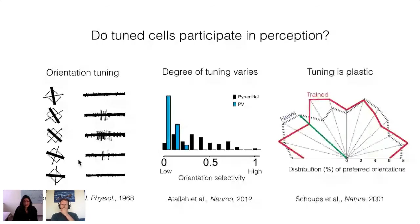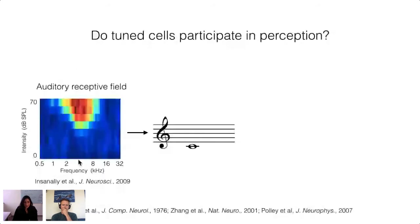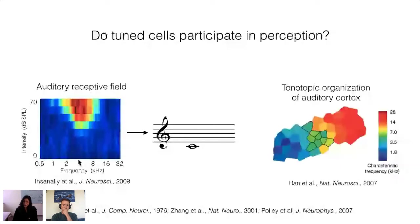Perceptually we either see oriented gratings or we don't, and there are many brain areas involved. We can ask the same question about the auditory system: are neurons tuned to pure tones responsible for us hearing middle C? Does the tonotopic organization of primary auditory cortex do anything as far as actual perception goes? We still don't have a clear answer to these questions.